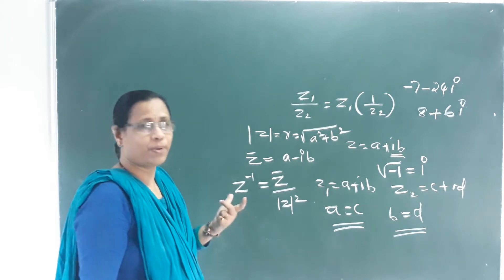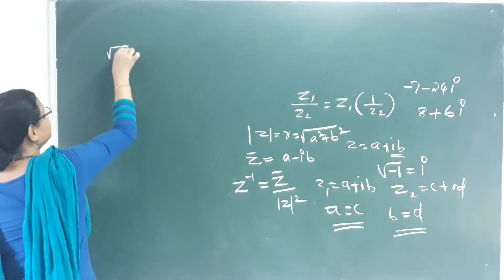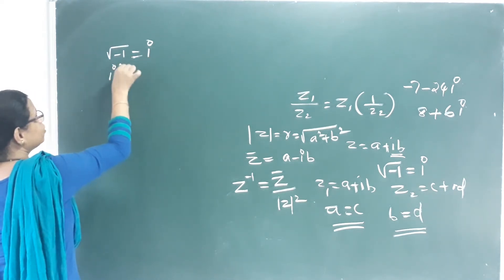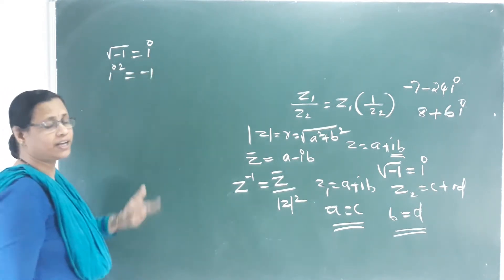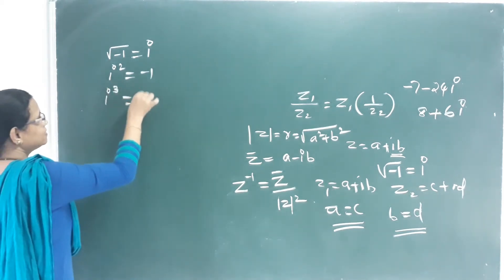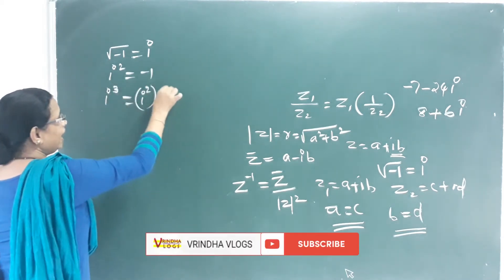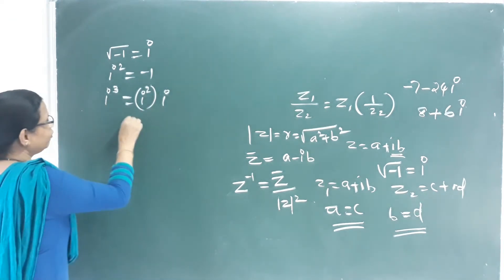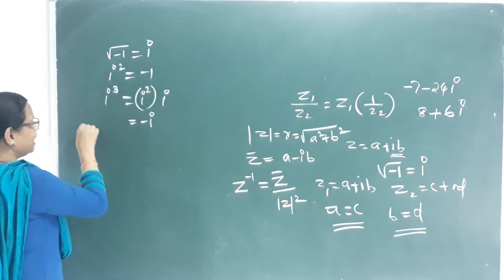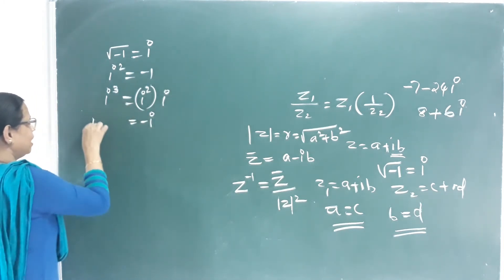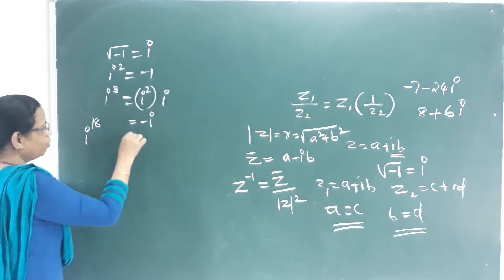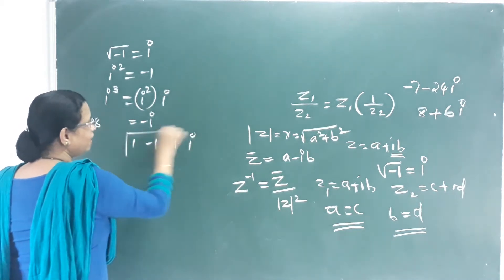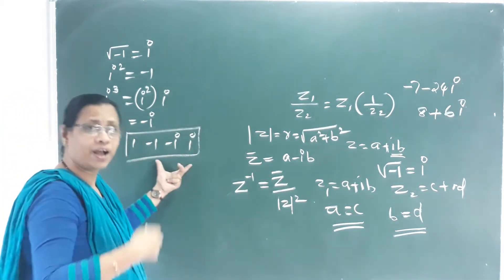The next topic is powers of i. We define i as the square root of negative one, so i² = −1. Then i³ = i² × i = −i. The powers of i cycle through four values: i, −1, −i, and 1. We can convert using these four formulas.